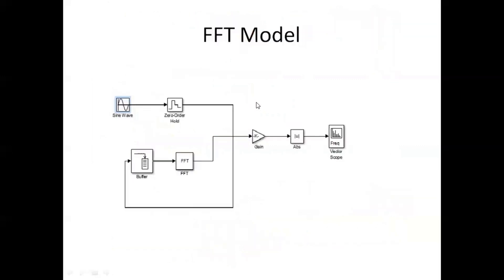This is the FFT model using MATLAB Simulink. First we choose the sine wave as the input — it's a continuous time signal. Then we give it to the zero-order hold, which is sampling. Next we store it in the buffer, assigning a buffer size. That output is given to the FFT, multiplied with the gain, the absolute is found, and plotted in the Vector Scope.